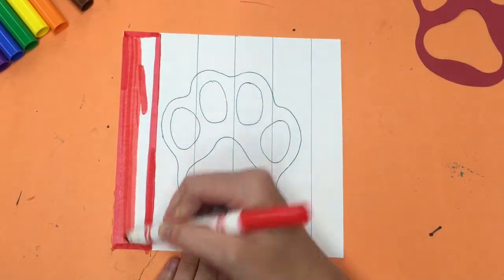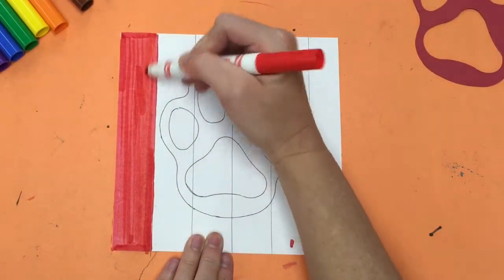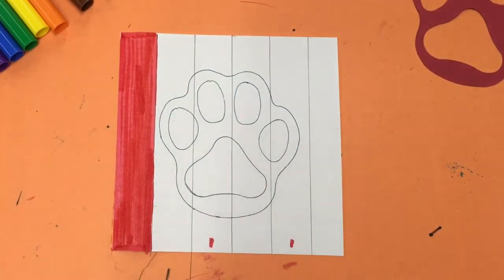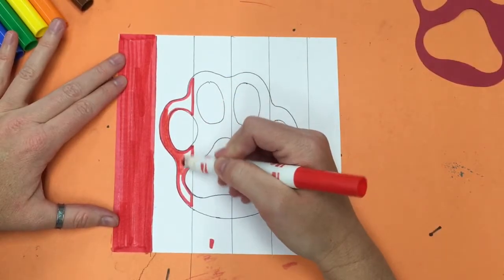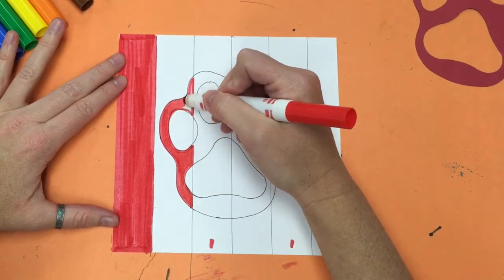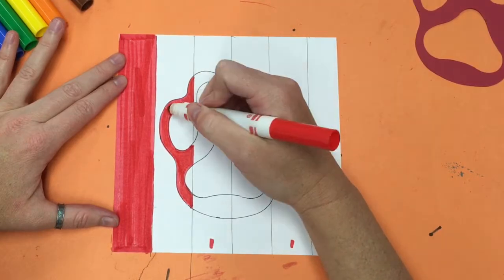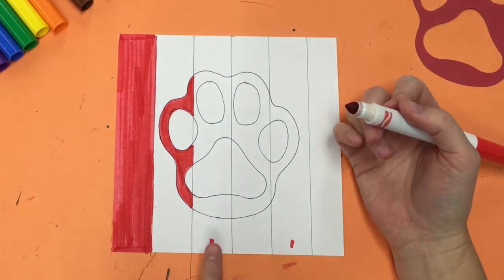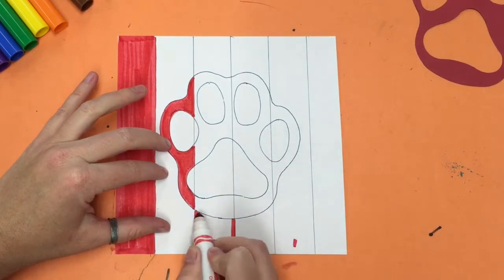If your picture has any of the paw print shape in the first stripe, don't color the shape. Leave it white. In the next stripe, I see some of the paw print shape. This time, I'm going to color only the paw print shape, not any of the stripe. So my A-B pattern is stripe, shape, stripe, shape.